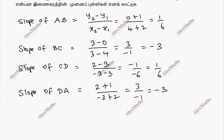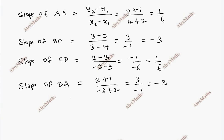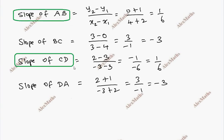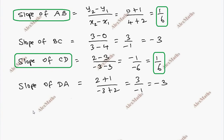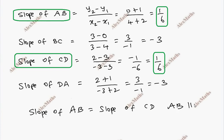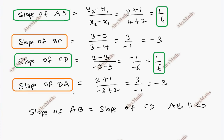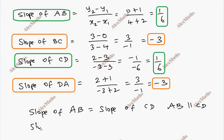So, slope of DA is minus 3. We can see that 1 by 6 equals 1 by 6, and slope of AB equals slope of CD. Therefore AB is parallel to CD.